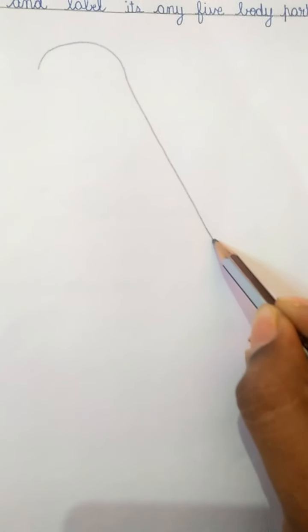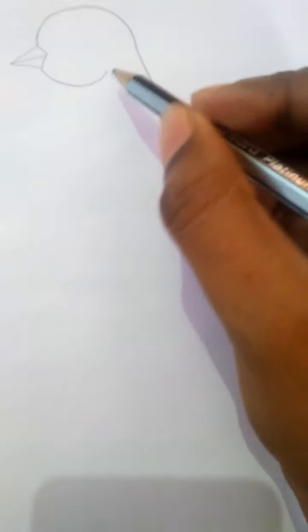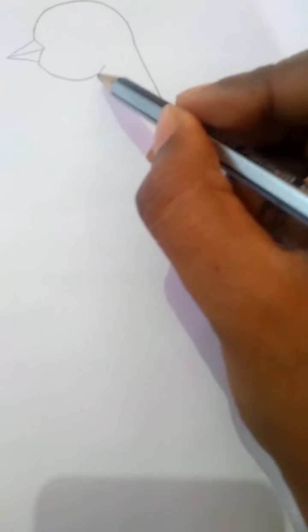Draw a curved line, then a straight one. Extend it. Now from here we are going to draw the beak. Let's join this. See, now from here we will complete this circle to draw its face.